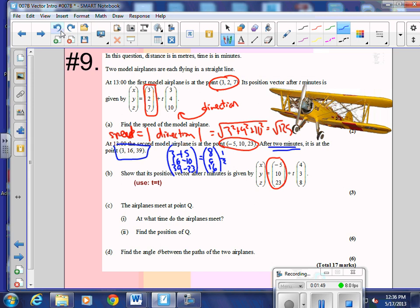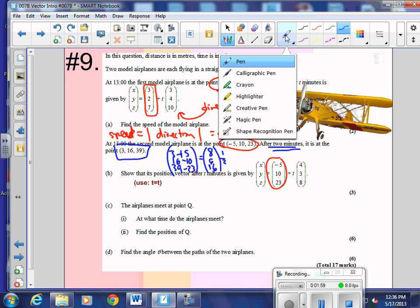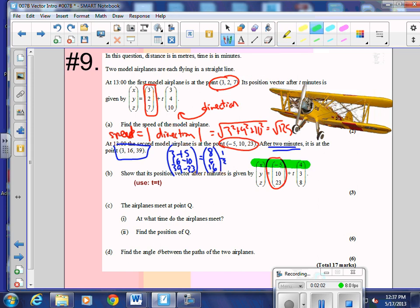All right, now it says, show that it's position vector. Okay, we did that. Now the airplanes are going to meet. At what time do the airplanes meet? So I'm going to take this guy. You guys are doing very well, by the way. I'm going to take these x's, and these x's have to line up, right? So they're coming like this, the x's have to line up. Now, if they line up here, they're not necessarily going to meet. If they're going to meet, what has to happen with the y's and the x's? Meet the same point. So we're going to check to see if that's true.